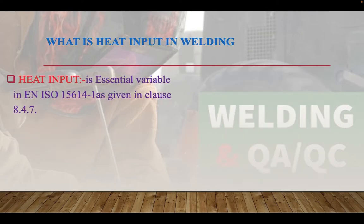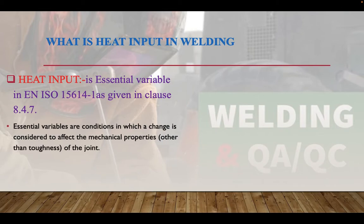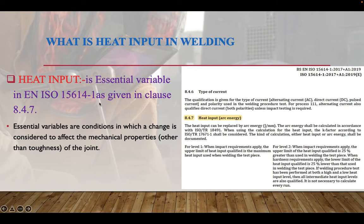Heat input is an essential variable as per EN ISO 15614-1, given in clause 8.4.7. Unlike the American standards where it is a supplementary essential variable, the EN ISO standard classifies it as an essential variable. Essential variables are conditions in which a change is considered to affect the mechanical properties — other than toughness — of the joint. This is stated in clause 8.4.7 under heat input.